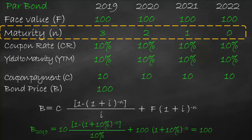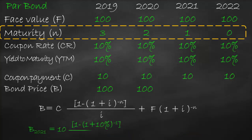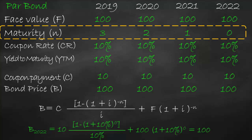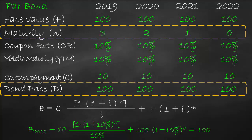For year 2020, I change N from 3 to 2, and we get a bond price of 100 again — because this is a par bond, so bond price must equal face value. For year 2021, N changes to 1, and the bond price is again 100. For year 2022, N equals 0, and the bond price is 100. As maturity decreases, the bond price remains constant at face value.